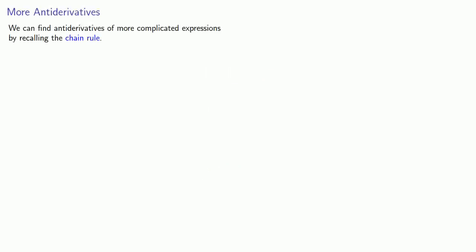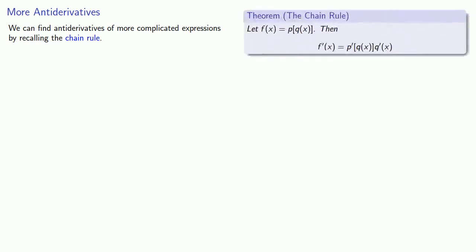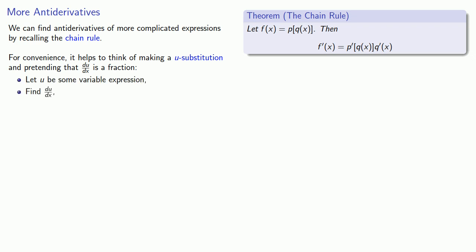We can find the derivatives of more complicated expressions by recalling the chain rule. For convenience, it helps to think of making a u-substitution and pretending that du/dx is a fraction. And we'll proceed as follows: Let u be some variable expression, find du/dx, solve for dx, and replace in our antiderivative f(x)dx.